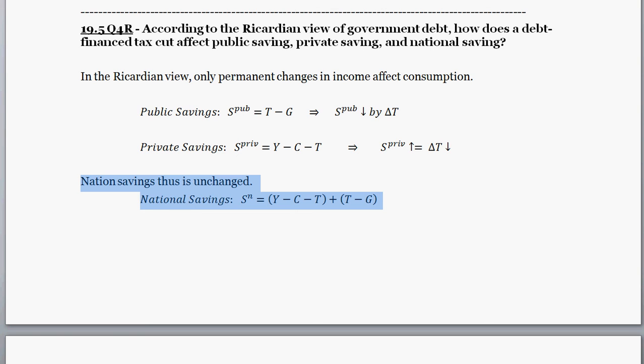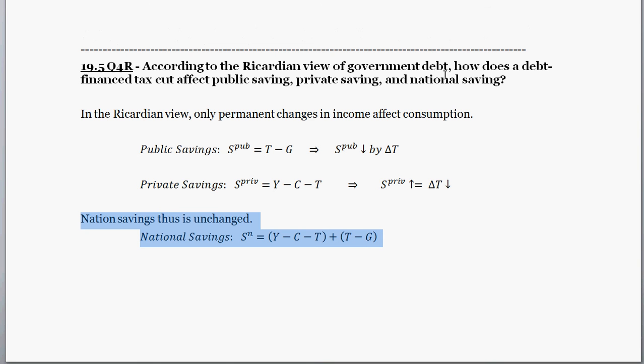So private savings increases by exactly the amount the tax cut decreases. Turning to national savings — national savings is thus unchanged. Since private savings increases by the tax cut and public savings decreases by the tax cut, national savings is net unchanged. According to the Ricardian view, a debt-financed tax cut does not stimulate consumption because it does not change permanent income. Forward-looking consumers understand that government borrowing today means higher taxes in the future.